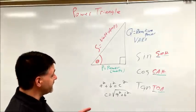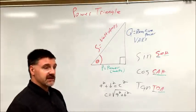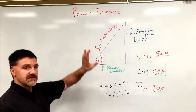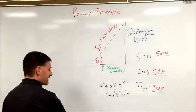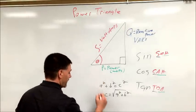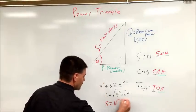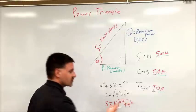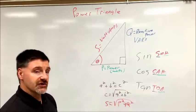But once again, because we're not dealing in sides A, B, and C, we have a power triangle, so we simply need to change these to mimic what's on our diagram. Therefore, S equals the square root of P squared plus Q squared. That is how we will solve for that.